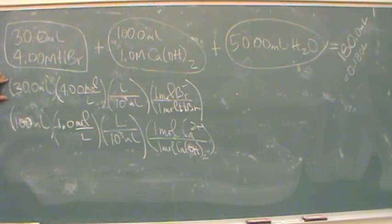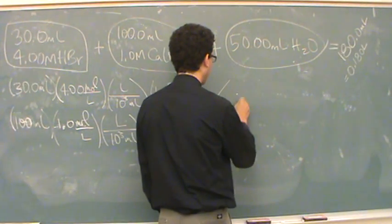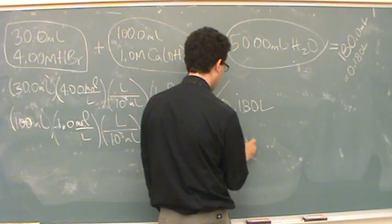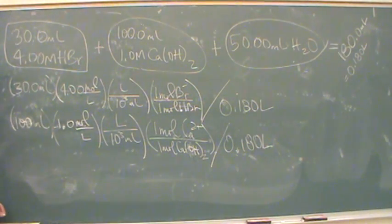So this will give me the moles of calcium. Now I have moles of bromine from the top and moles of calcium from here. What am I going to do with those numbers? Divide by molarity. I'm going to take this one and divide by 0.180 liters, and this one by 0.180 liters.